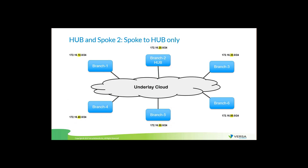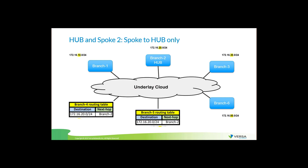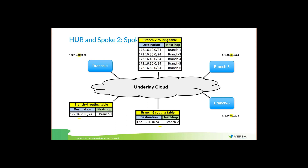The next topology is hub and spoke two — spoke to hub only. In this case, once again, let's imagine that branch two is our hub and all the rest are spokes. If branch four would like to communicate with what is behind branch two, they can directly go to branch two. But branch four will never be able to communicate with the network behind branch five. From the routing perspective of branch four, we will receive routes only from branch two — our hub — and will not even receive the routes that are behind branch five and other branches. While from the hub perspective, it will know how to reach any of the networks. This topology might be recommended for the guest VRF or for services that require one-to-many communication, but not communication between the branches.